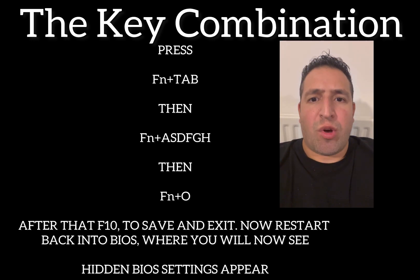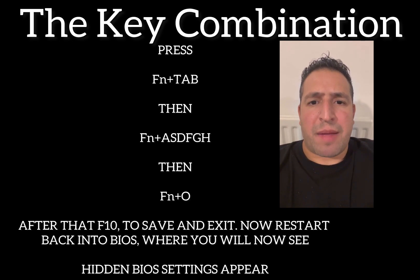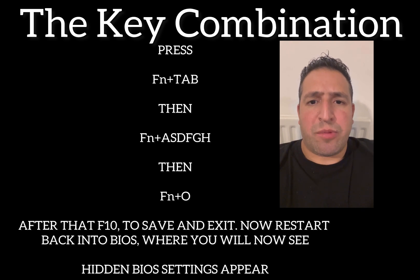Once you have pressed the key combination as mentioned, press F10 to save and exit, then restart your laptop. Keep tapping the F2 key, go into BIOS again, and advanced BIOS settings should be unlocked and enabled. You should be able to see the hidden menu settings.